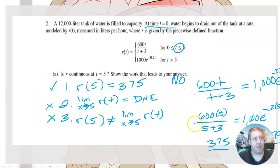All right, so I look at example number 2. So it says, is R continuous at t equals 5? Once again, we have another piecewise function. It says, a 12,000 liter tank of water is filled to capacity at times t equals 0. Water begins to drain out of the tank at a rated model by R of t measured in liters per hour. Where R is given by the piecewise defined function. All right, once again, 5 is included on the top piece.